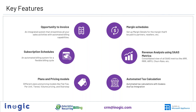These metrics are extremely important for top management to get a real holistic view of the business — and not just visibility, but basis these numbers, management can also make course correction decisions. We also support automated tax calculations and, most importantly, the subscription schedule itself: an automated billing system with a very flexible billing cycle. To support the subscription schedule, we have various plans and pricing models — flat fee, per unit, tier, volume pricing, and stair step.